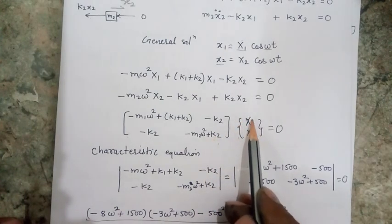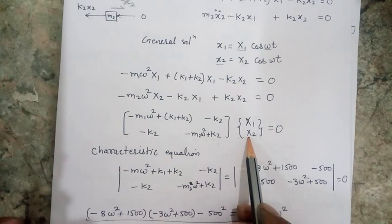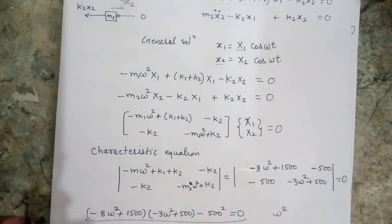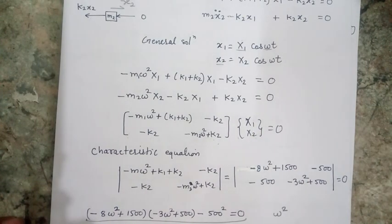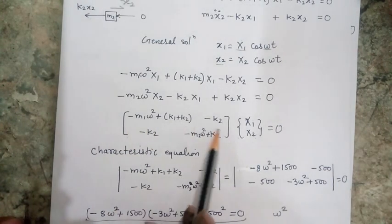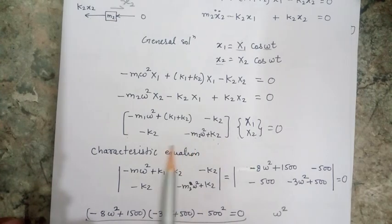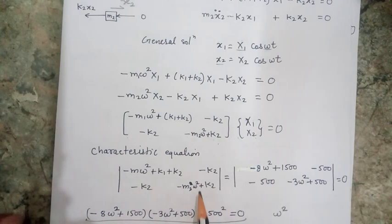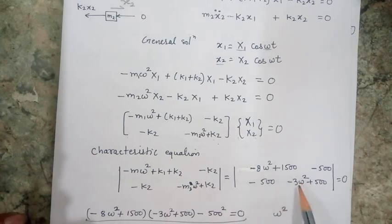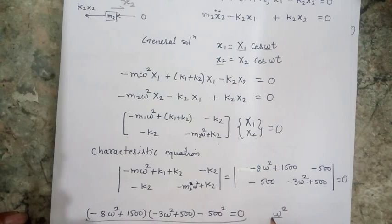The displacement vector is denoted by capital X1 and capital X2. This is my characteristic equation. I know I can get a trivial solution by assuming X1 and X2 are zero, but that will not serve the purpose. So I will consider that the determinant of this matrix will be zero. When I use all the numerical values in this determinant and solve it, I get a quadratic equation in terms of ω².